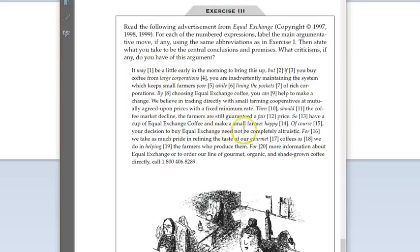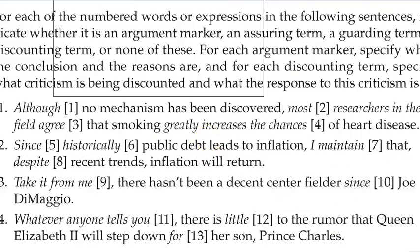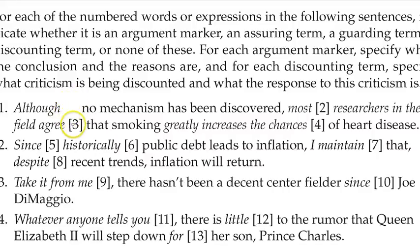The only difference on the exam is I won't give you the numbers — I'll just give you a paragraph, maybe two shorter ones, and ask you to annotate for all the things we're looking for: argument markers, assuring, guarding, discounting, and evaluative terms. So the text will be there and you'll circle things and label which category you think they are. Let's look at this example.